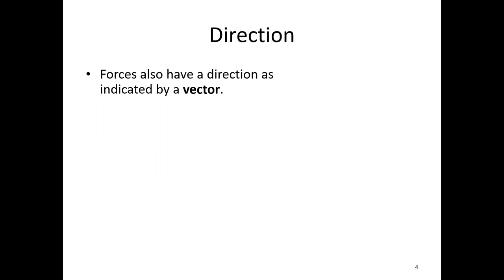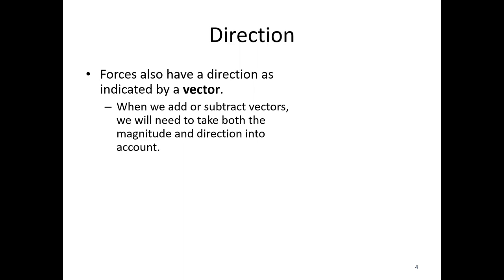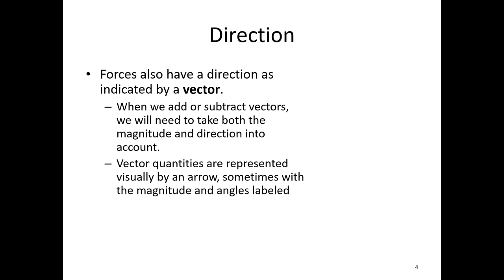Next up, we're going to talk about direction. So forces have a direction as indicated by a vector. When we add or subtract vectors, we need to take both the magnitude and direction into account. And vector quantities are represented by an arrow, sometimes with the magnitude and angles labeled. So over here, we've got an example. So F equals 600 newtons is the magnitude, and the direction of that arrow is the direction of my force.